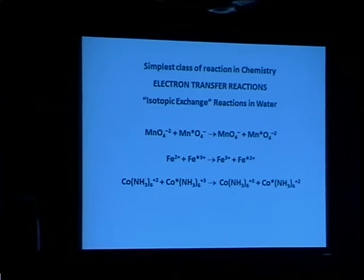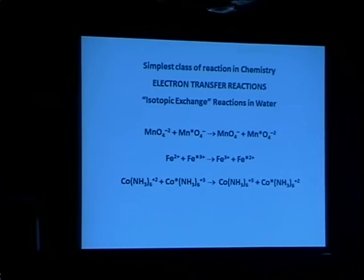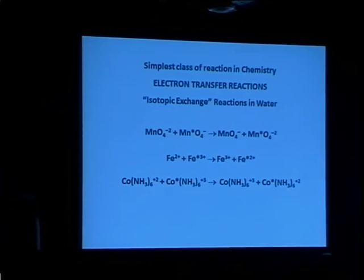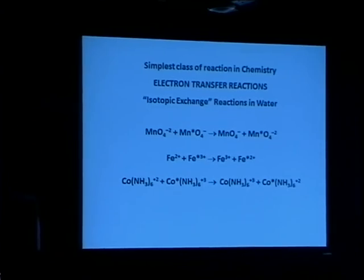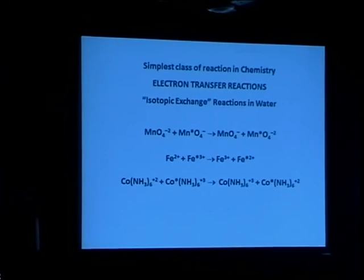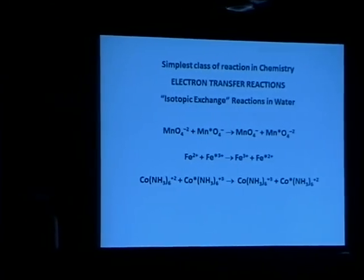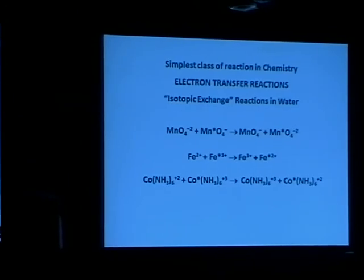Only an electron is transferred. In most reactions of chemistry, bonds are broken and new ones are formed — it's really pretty complicated. But in this type of reaction, just an electron is transferred. Of course, that's a very limited reaction. On the other hand, because of its simplicity, it offered the possibility of going into the mechanism of what's actually happening in far more detail than was possible with the usual kind of chemical reaction, which involved the breaking and forming of bonds.